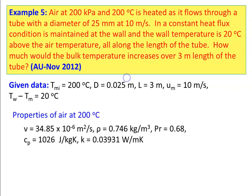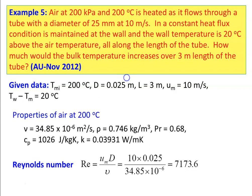Properties of air at 200°C: ν = 34.85 × 10⁻⁶ m²/s, density = 0.746 kg/m³, Prandtl number = 0.68, specific heat = 1026 J/kg·K, thermal conductivity = 0.03931 W/m·K. Reynolds number = 10 × 0.025 / (34.85 × 10⁻⁶) = 7173.6 — turbulent flow.